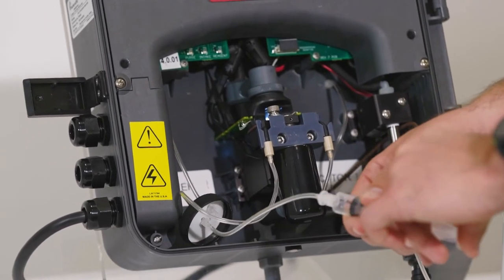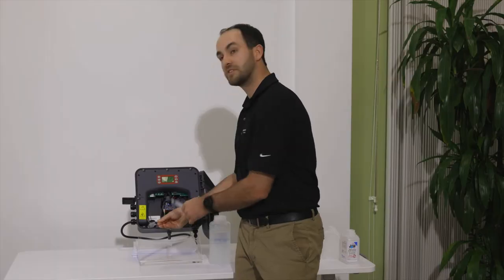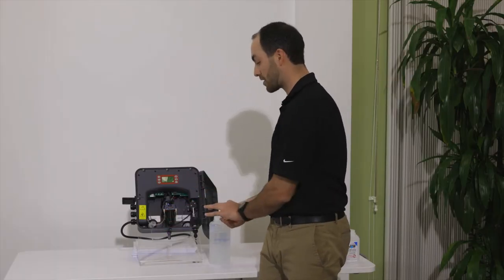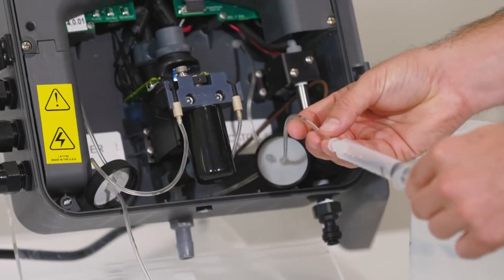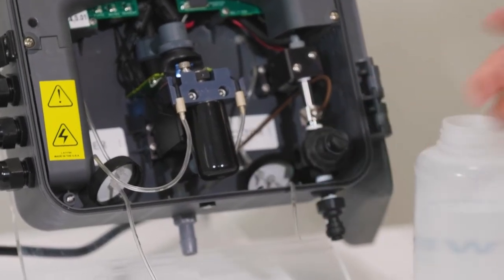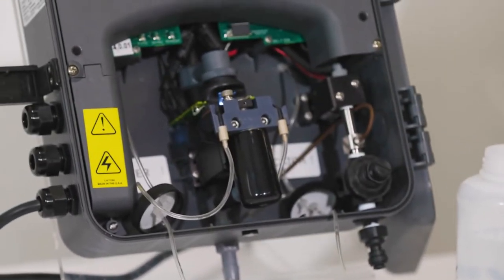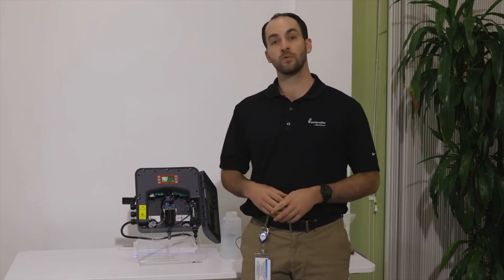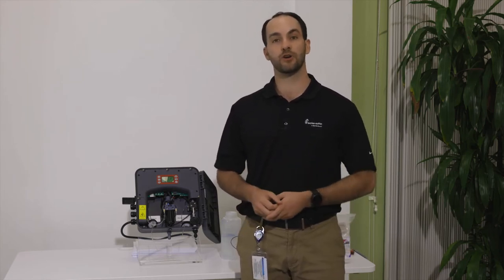Once we flush 10 milliliters of DI water through we will do the same thing on the other side. DI water into the syringe, lure lock into the end and we will go ahead and push the DI water through on both sides. So after we flush the lines we are ready to go ahead and mix our new reagents.